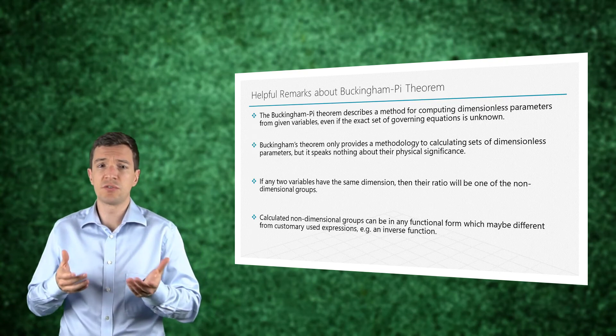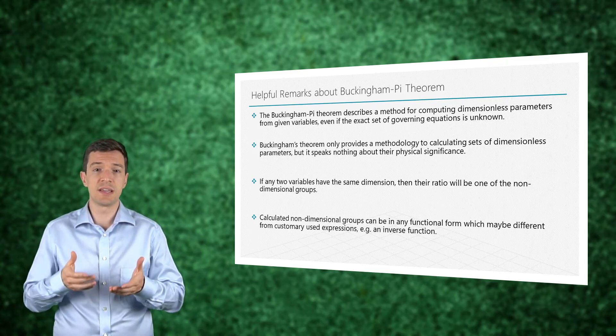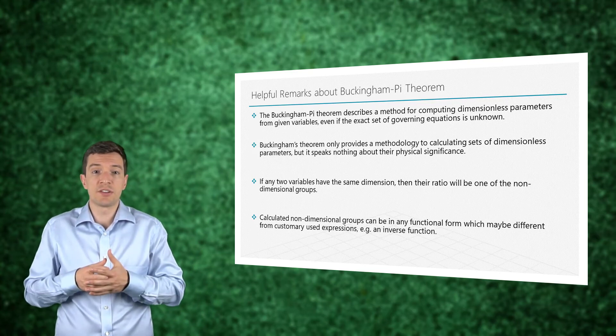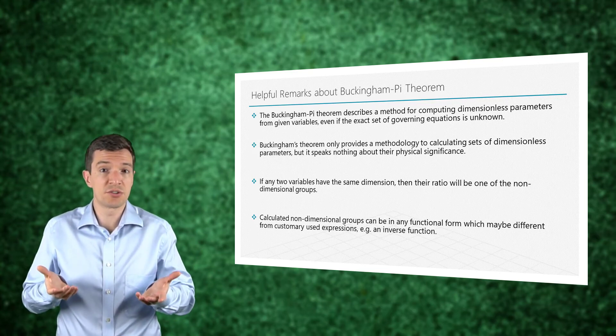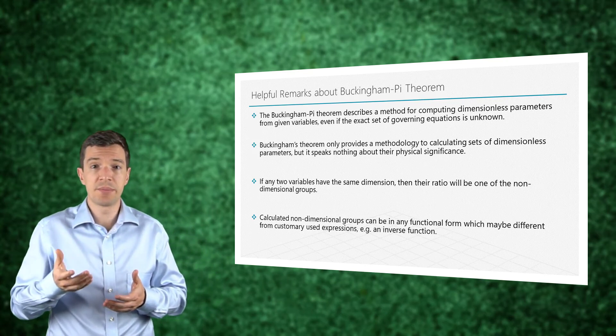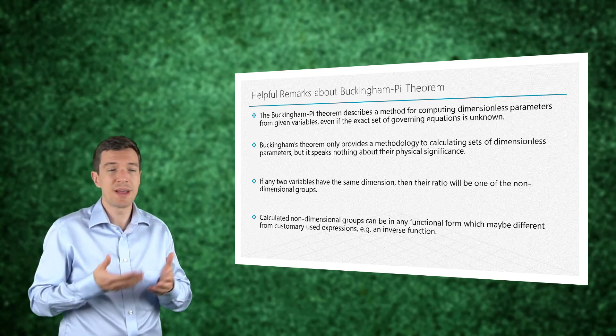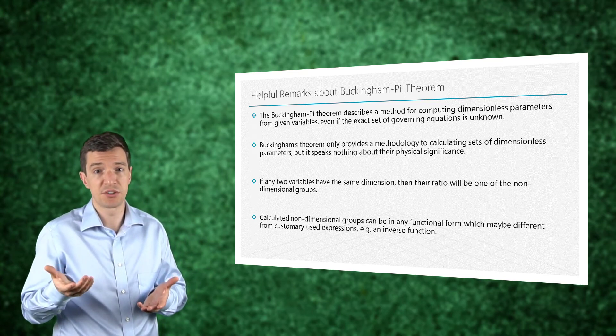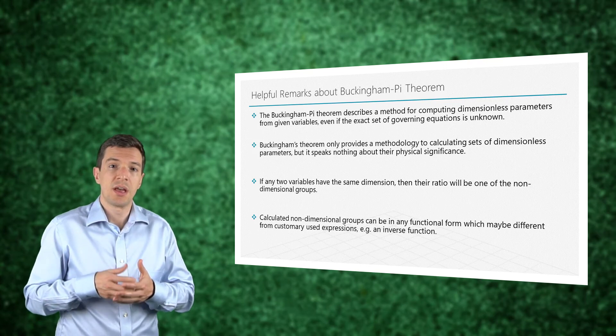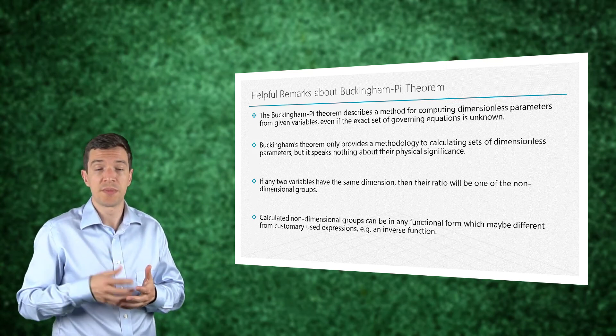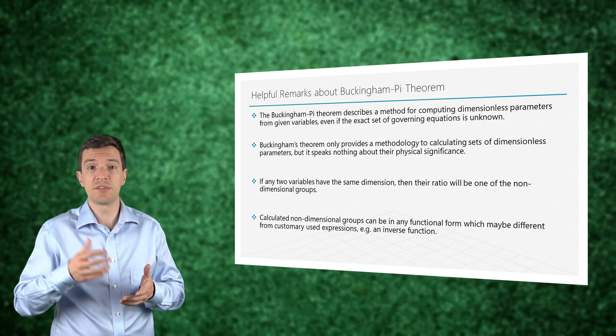For example, the ratio of two variables defined by the same fundamental quantity would eventually define a non-dimensional group. Also, the resulting parameters may be expressed in many different forms that may differ to the customary used expressions, as for example what we have seen for the second pi group that was the inverse of the Reynolds number.